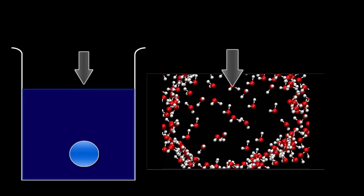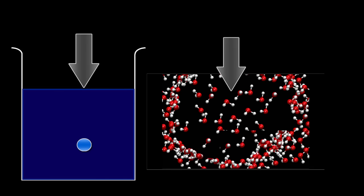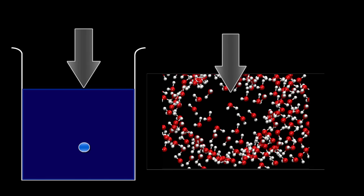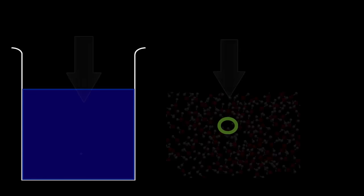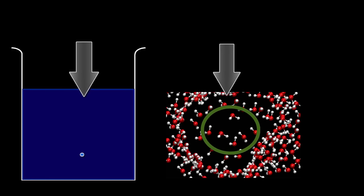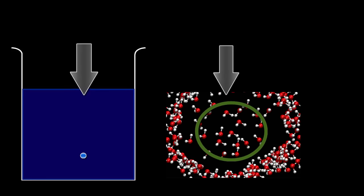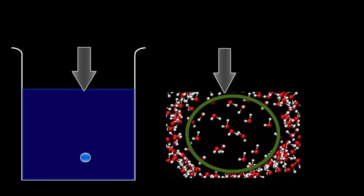Here we have our beaker with a bubble. If we increase the pressure, the molecules in the bubble will move closer together, and eventually they'll change back into liquid water. Alternatively, if we decrease the pressure, that makes it easier for those water molecules to spread out and form a bubble — and that's boiling.